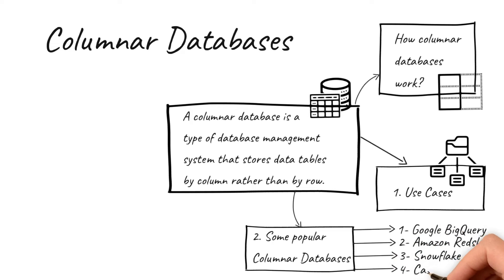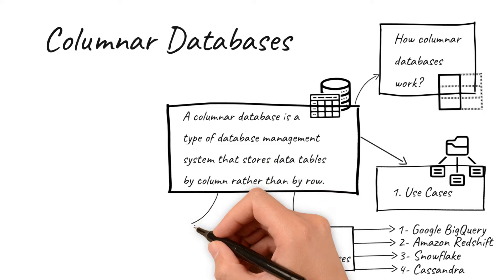4. Cassandra — it is a NoSQL database with the option of storing tables as columns.